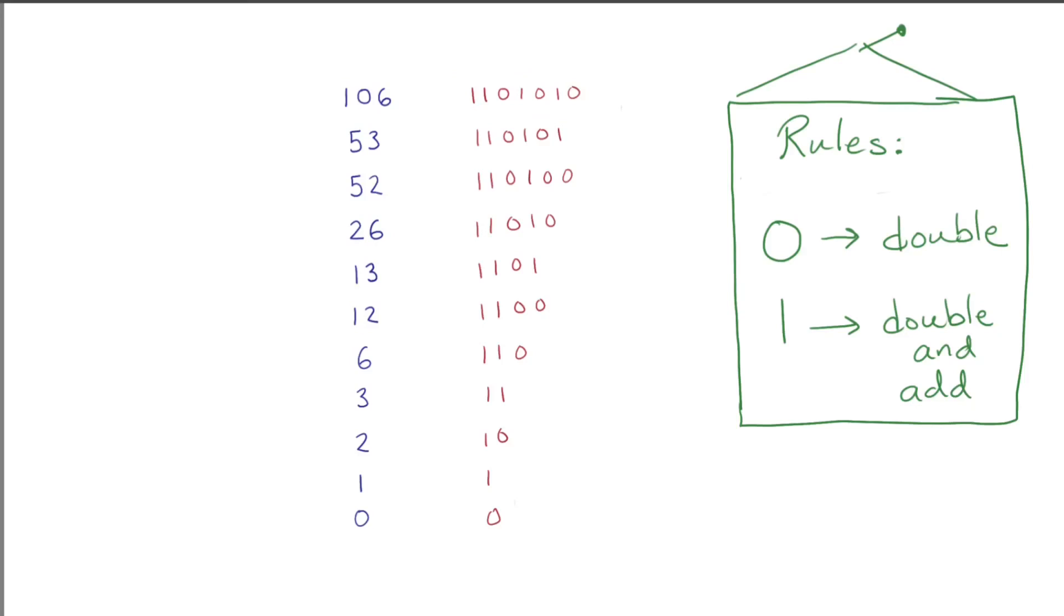So that's where double and add comes from. If you follow the development here, you should never need to memorize anything. Just write your number in binary and unravel it, and the algorithm kind of shines forth.